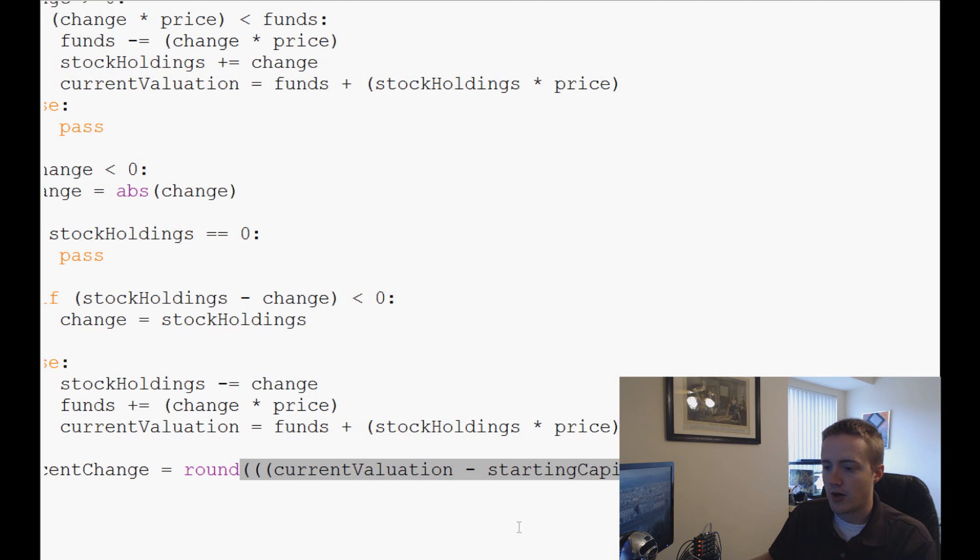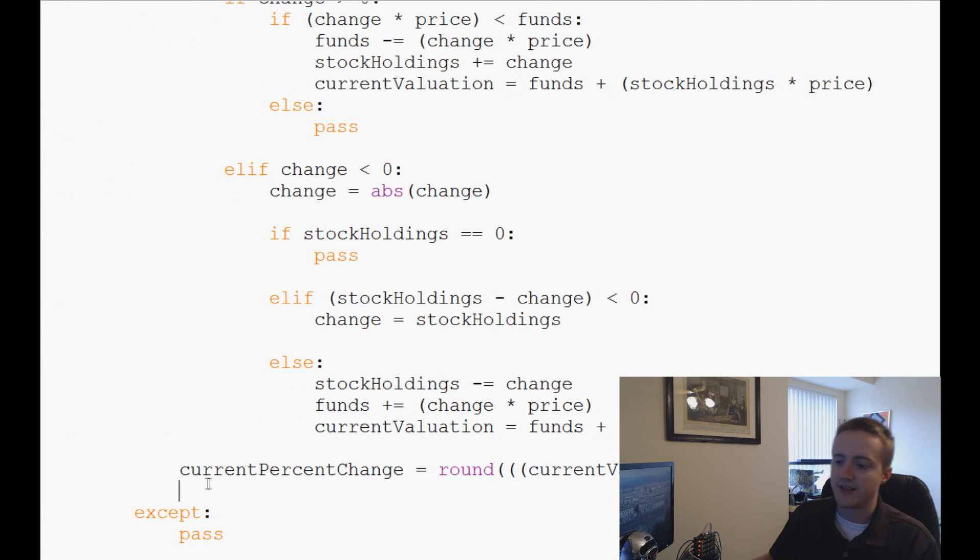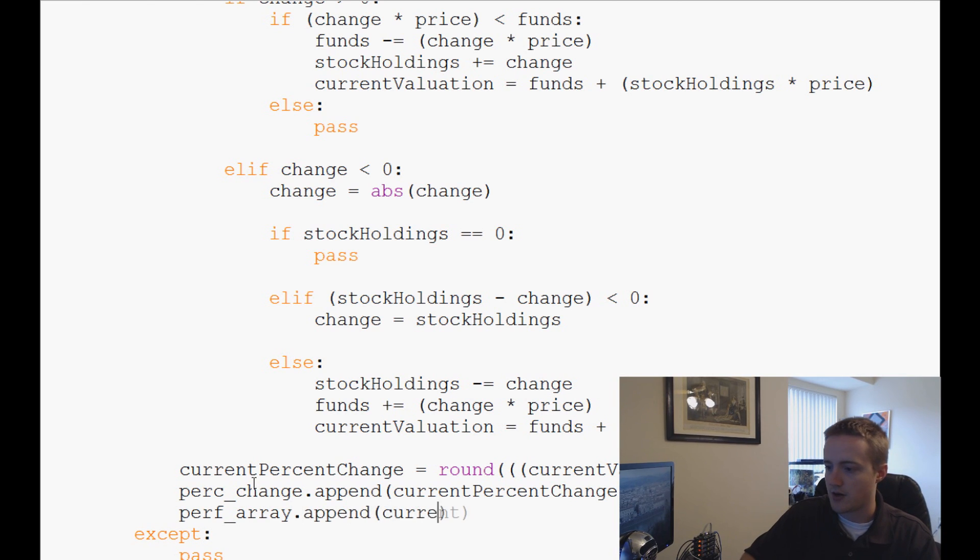So that's our current percent change basically for each row. It's going to save that percent change because what we end up wanting to do so we can kind of normalize all of this data is we're going to plot it based on percent change, not based on actual change. So we can plot all of these companies together. And then we're going to say perc_change.append current percent change. And then we're going to do perf_array.append the current valuation.